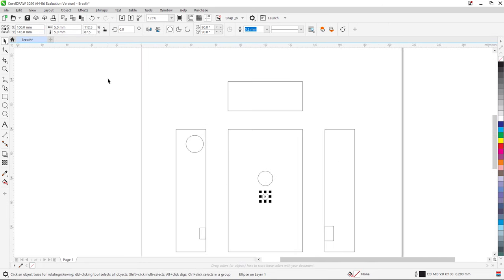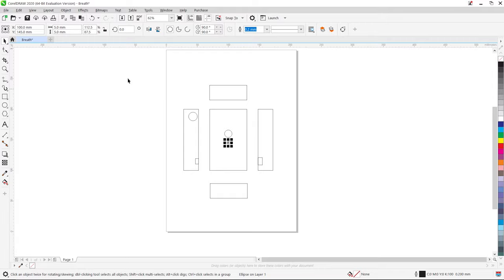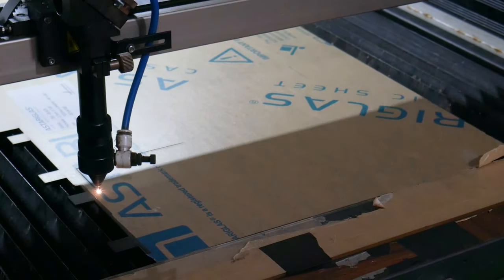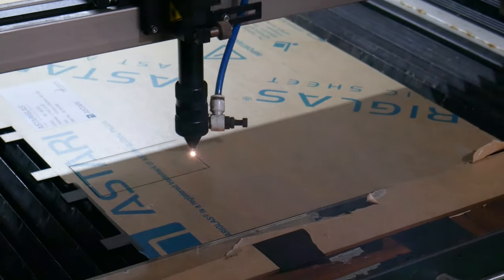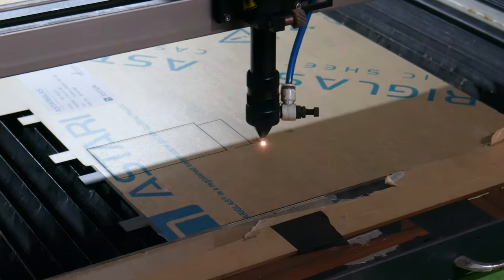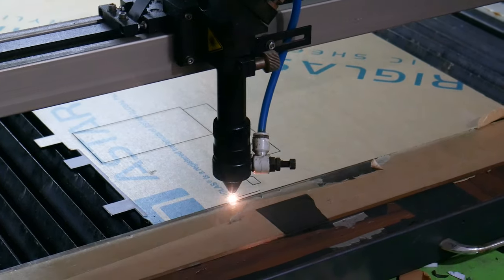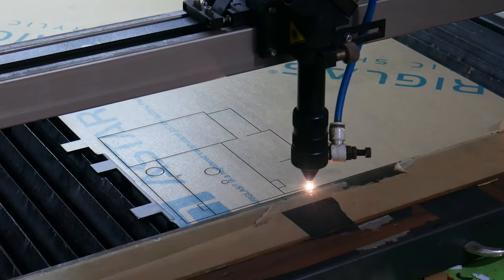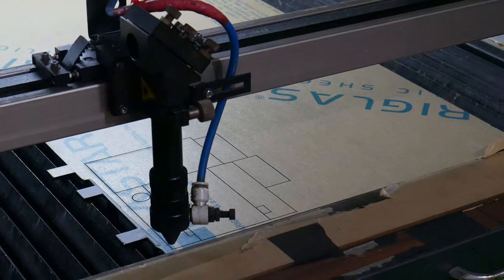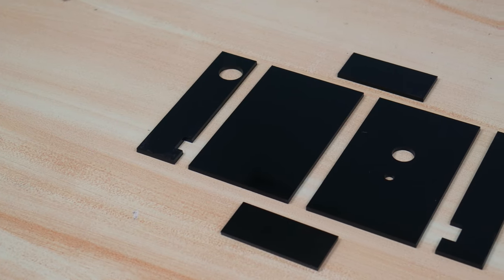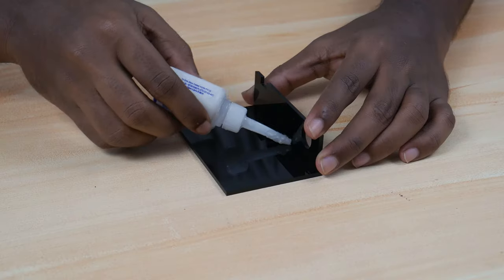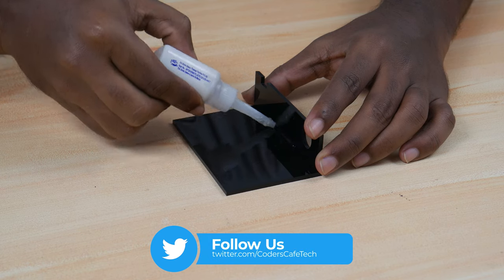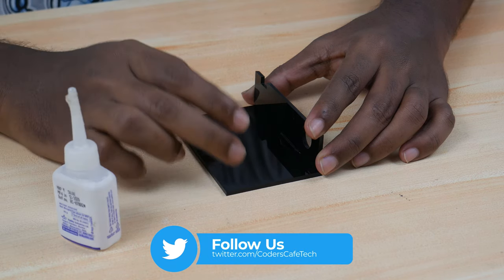Here we have our files ready for laser cut. Finally let's start laser cutting. These are our cut out acrylic pieces. Now let's assemble all the things and stick the acrylic pieces to form the frame.